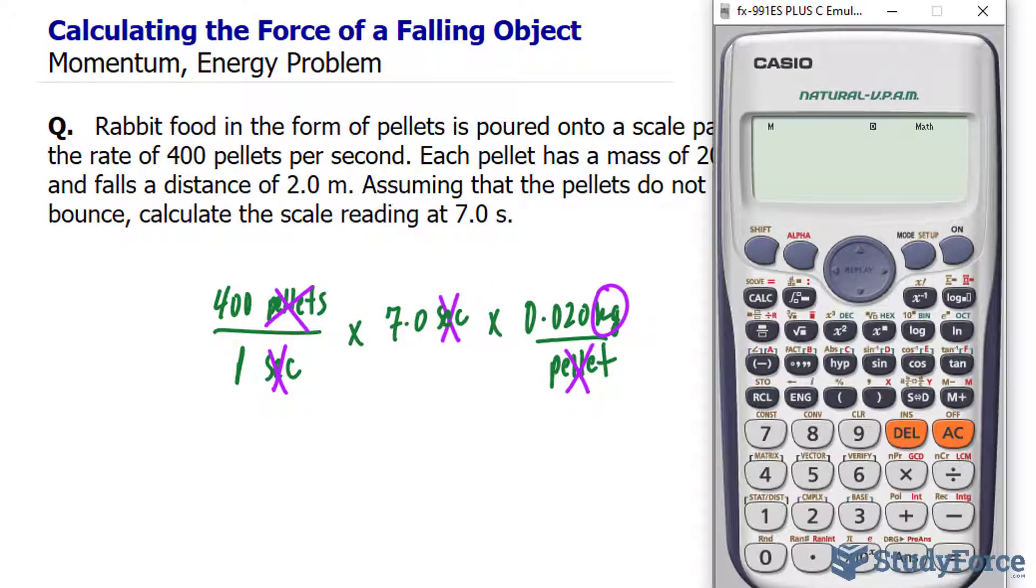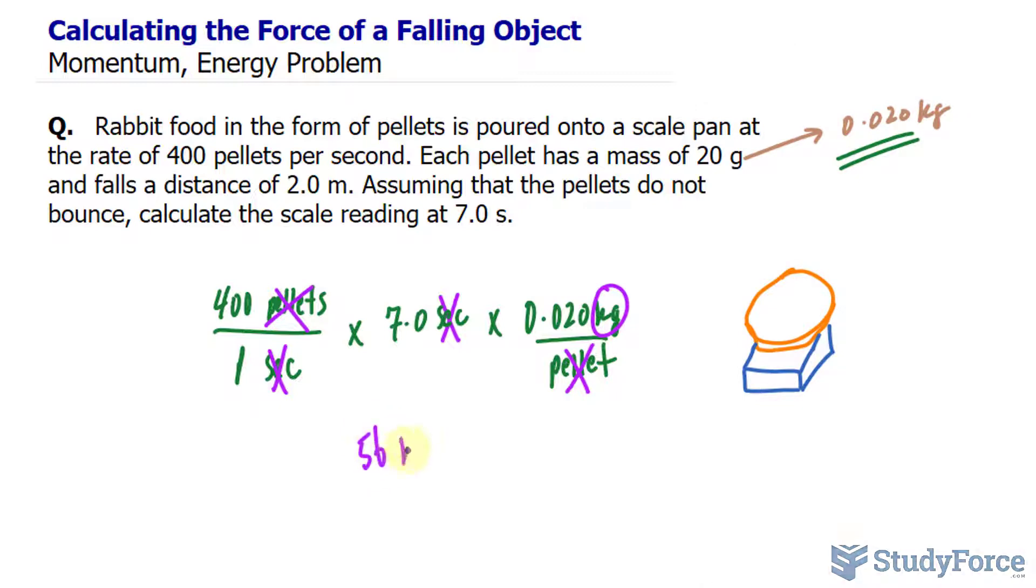Using our calculator, we have 400 times 7 times 0.020, and we get 56 kilograms. That's a lot of pellets.